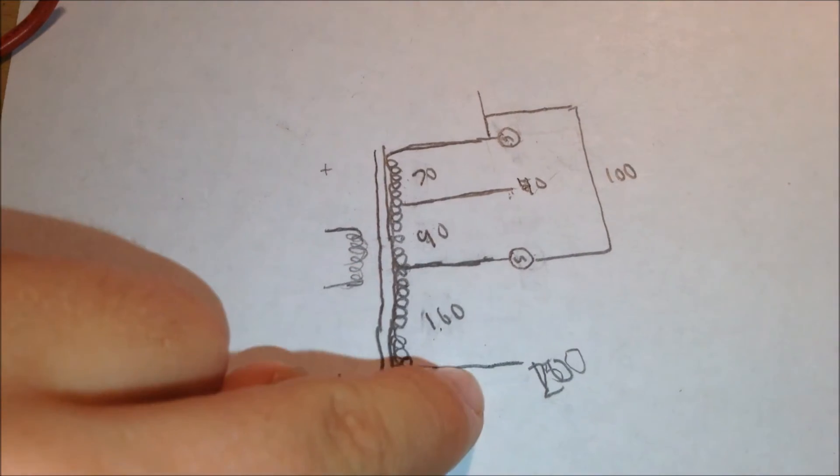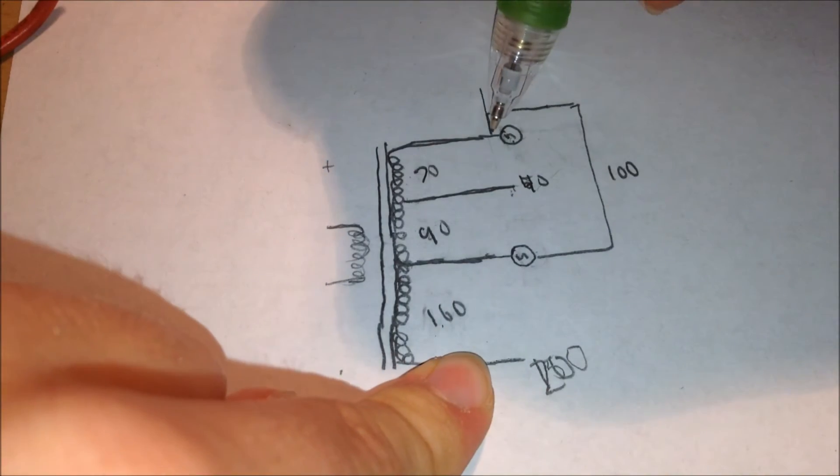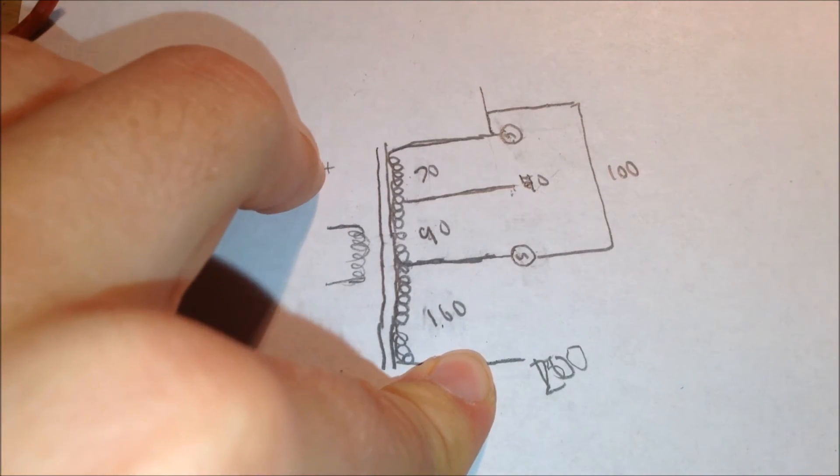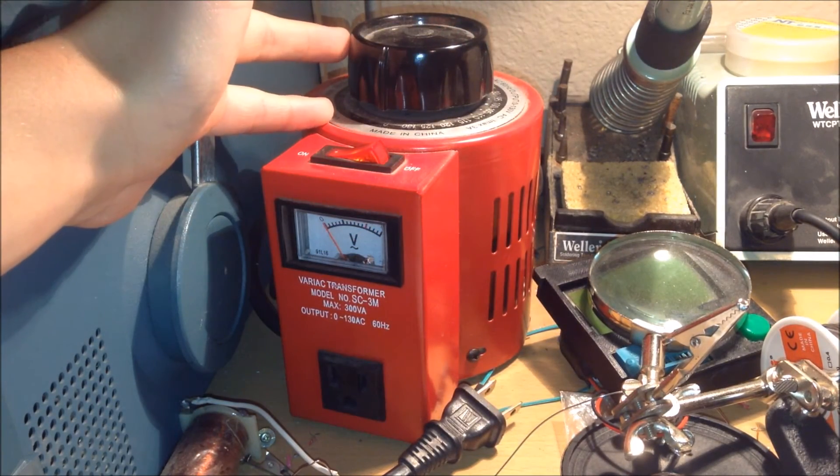Because I'm referenced to ground normally, and I touch this and this is a live wire, assuming this is neutral, then what will happen is I will get shocked. One example of an autotransformer is this variac transformer right here.